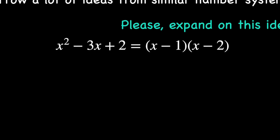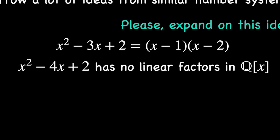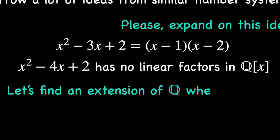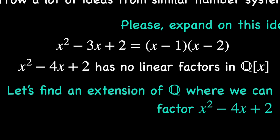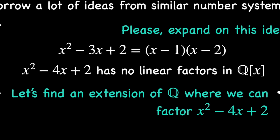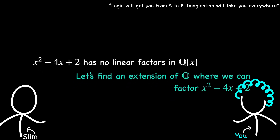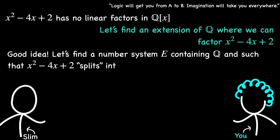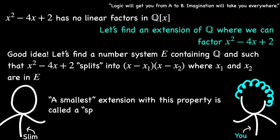Now let's turn our attention to the polynomial that started this whole discussion: x squared minus 4x plus 2. If we try to factor this polynomial using only rational numbers, we hit a roadblock — there are no rational numbers that will allow us to factor it into linear terms. This is where the idea of extending our number system becomes crucial. Just like we extended the natural numbers to the integers to allow for subtraction, and the integers to the rationals to allow for division, we need to extend the rational numbers to a new number system where x squared minus 4x plus 2 can be factored. This process of creating a new number system to split a polynomial into linear factors is what we call constructing a splitting field.